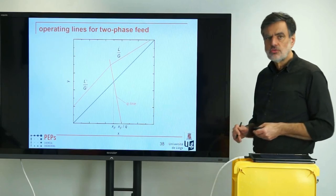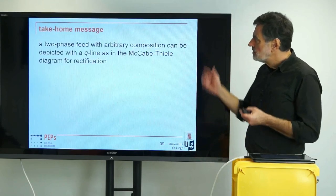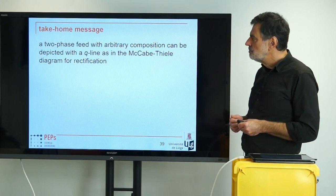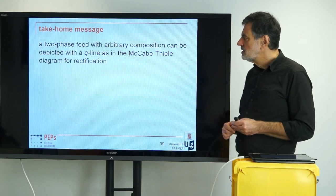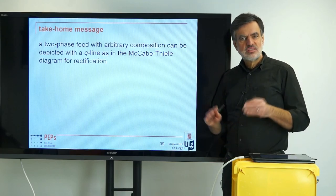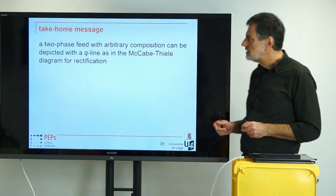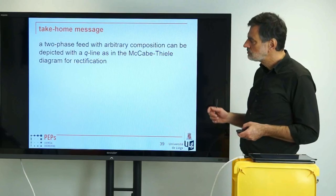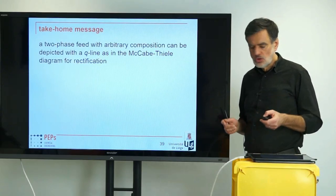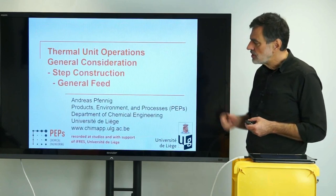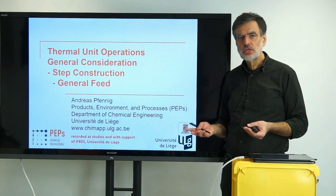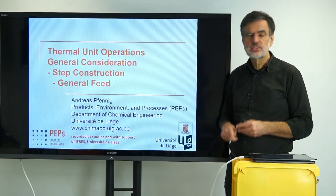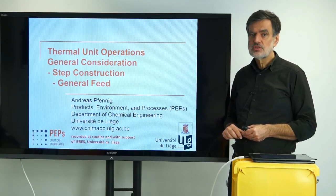Having accounted for that, what is the take-home message? A two-phase feed with arbitrary composition can be depicted with a Q line as in the McCabe-Thiele diagram for rectification — same mathematical Q line. The formula is identical because the balances in the end have to be identical. So with that, I would like to conclude at this point and continue with other topics in the next videos. Thank you very much.